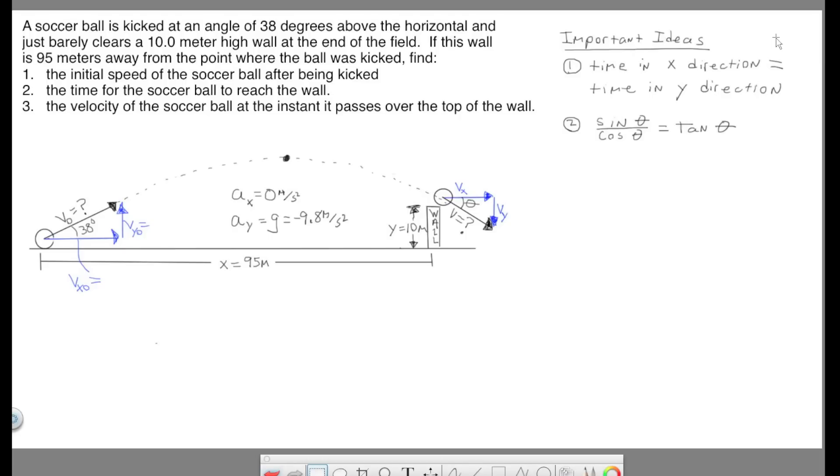The first idea: time in the X and time in the Y, it's always the same. Just meaning if we pick like a point right here at the highest point, the time it takes for the ball to reach the highest point is the same in the X as it is for the Y. And that's true for all points. And then the second idea is a trig identity: sine over cosine equals tangent. We're going to be using that to simplify the math.